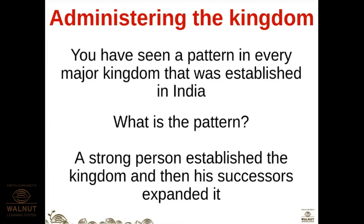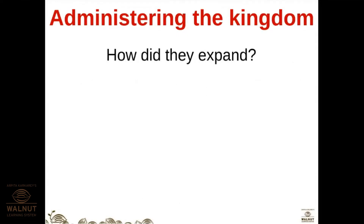The pattern is: a strong person established the kingdom and then his successors expanded it. Successors are the next generation - it might be his son, his chief commander-in-chief, or a trustworthy person to whom the king handed over the kingdom. We all know how a kingdom runs: if a king dies, his son is ready to take the throne. So a strong person established the kingdom and his successors expanded it.